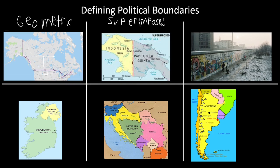Next we have the Berlin Wall. The Berlin Wall was historically used to separate East from West Germany when Germany was divided. This was a physical boundary. Now this boundary is no longer in use — it's still in Germany and still part of its cultural landscape. That makes it a relic boundary. A relic boundary is a boundary no longer in use but still visible and still part of the cultural landscape, like the Berlin Wall.